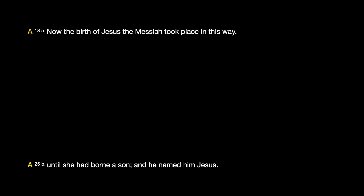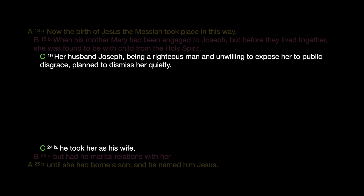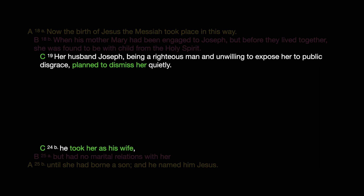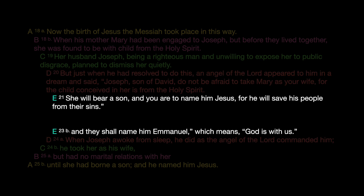It reads as follows. A gives us the parameters of the structure and bookends the chiasm with Jesus' name and reference to his birth. B highlights the absence of sexual relations between Joseph and Mary. C is all about Joseph's turnaround in regards to his relationship with Mary — first he's going to divorce her, but then instead he marries her. D: Joseph sleeps and receives instruction, then awakes and follows through. E is all about the meanings of the name of Jesus: God saves us, and God with us.